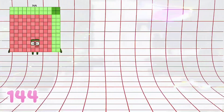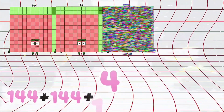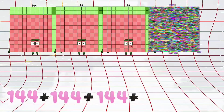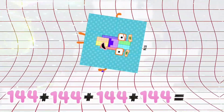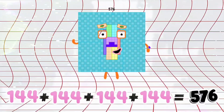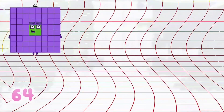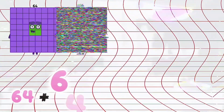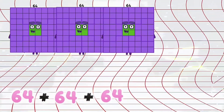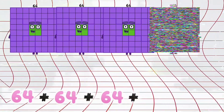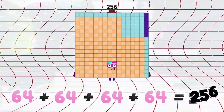144 plus 144 plus 144 plus 144 is equals to 576. 64 plus 64 plus 64 plus 64 is equals to 256.